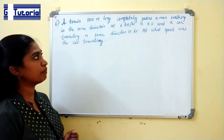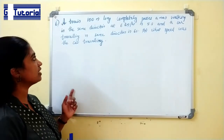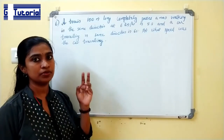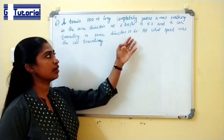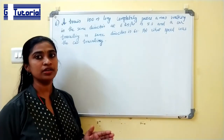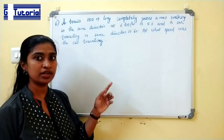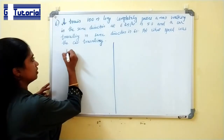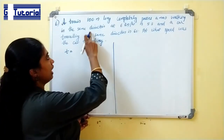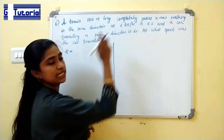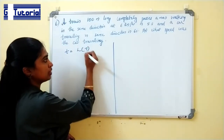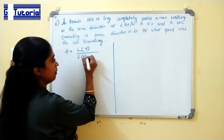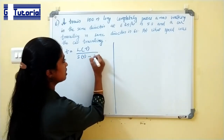A train 100 meters long completely passes a man walking at 6 km per hour in the same direction in 5 seconds, and passes a car travelling in the same direction in 6 seconds. At what speed was the car travelling? Since both man and train move in the same direction, relative speed equals speed of train minus speed of man.